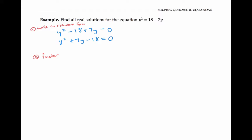To factor, I need to look for two numbers that multiply to negative 18 and add to seven. Two numbers that work are nine and negative two. So I can factor the expression on the left as y plus nine times y minus two equals zero. Now, anytime you have two quantities that multiply together to give you zero, either the first quantity has to be zero, or the second quantity has to be zero, or both could be zero.